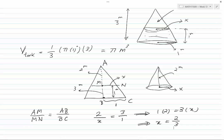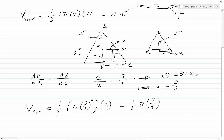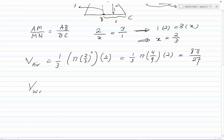Now let's use this value of x to find the volume of air. It would be one-third π, the radius which is 2/3 squared, times height which is 2. We can simplify this to one-third π, 4 over 9, times 2, and this simplifies to 8π divided by 27.